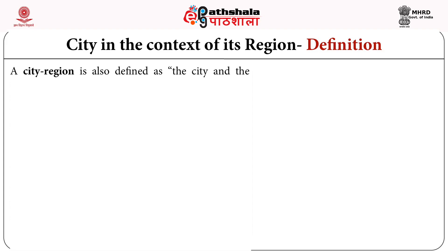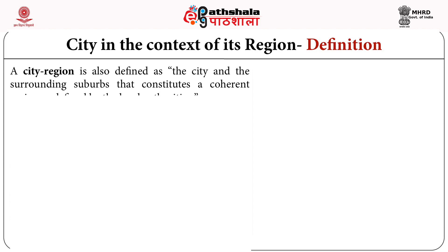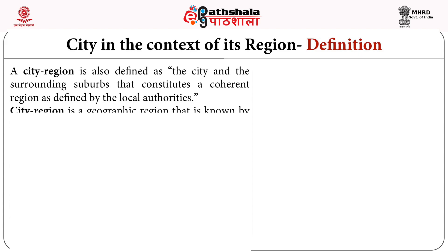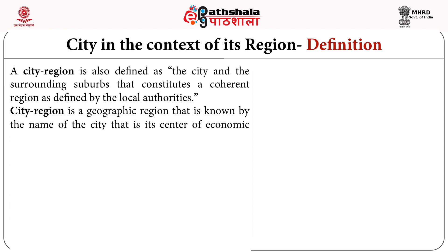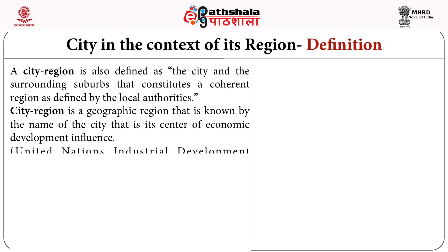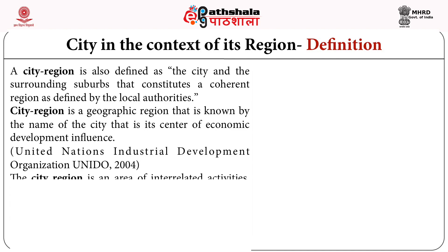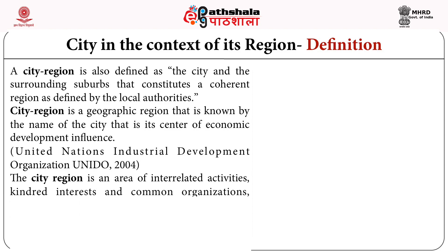UNEDO has defined a city region as the city and the surrounding suburbs that constitute a coherent region as defined by the local authorities. A city region is a geographic region known by the name of the city — NCR, the National Capital Region, is an example. It is also defined as an area of interrelated activities, interests, and common organizations brought about through the medium of routes which bind it to the urban centers.